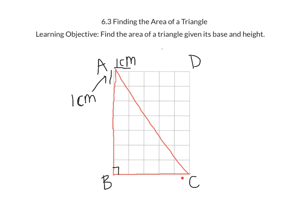BC is the base and AB is the height. The length of the base BC is equal to 5 centimeters. The length of the height AB is equal to 7 centimeters. And we got those numbers by counting the squares.